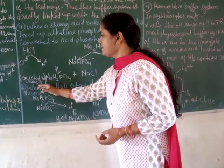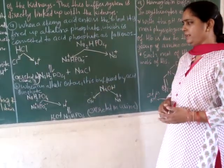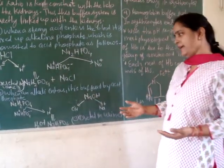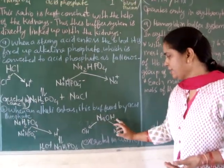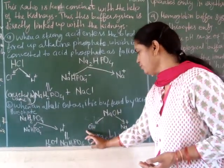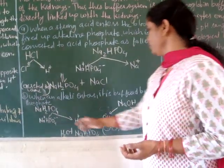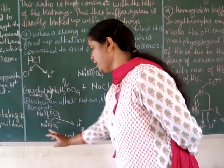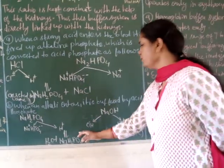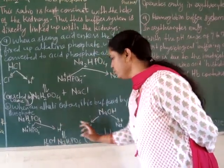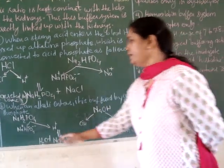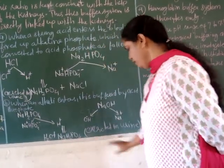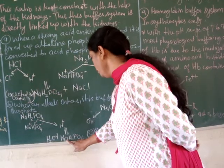The increased concentration of NaH₂PO₄ is excreted in urine with the help of the kidney. When an alkali enters, it is buffered by acid phosphate. For example, NaOH dissociates into hydroxyl ion and sodium ion, while acid phosphate NaH₂PO₄ dissociates into a proton and its corresponding conjugate base. The hydroxyl ion combines with the proton to form water, and the conjugate base combines with sodium ion to form Na₂HPO₄. The increased concentration of this phosphate is then excreted in urine with the help of the kidney.